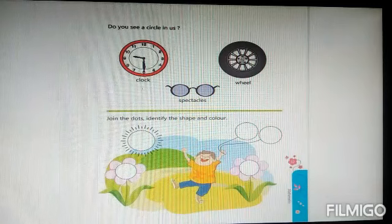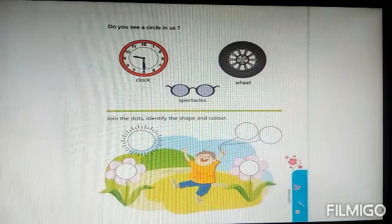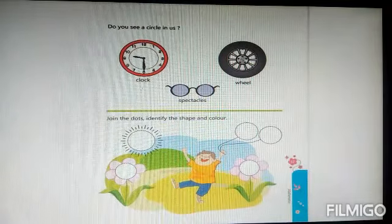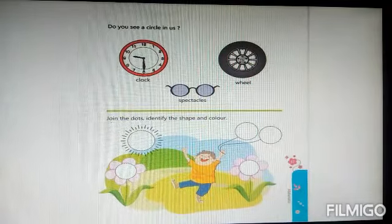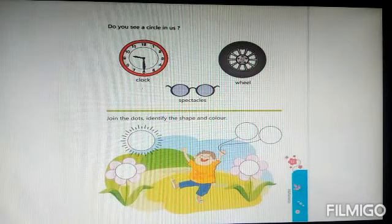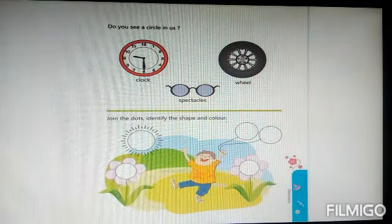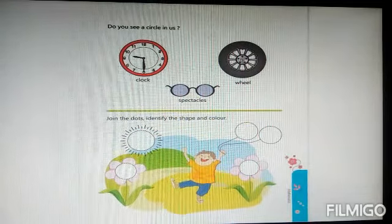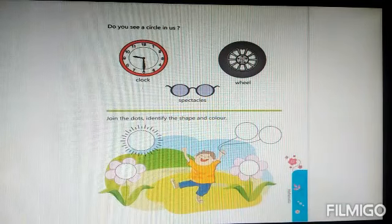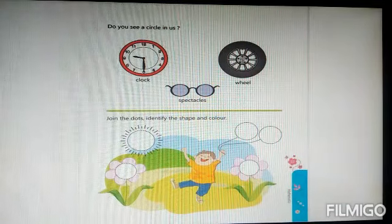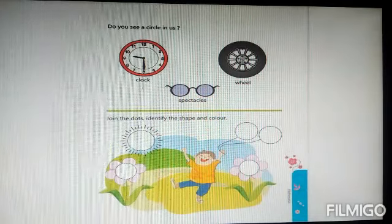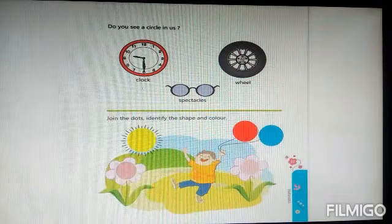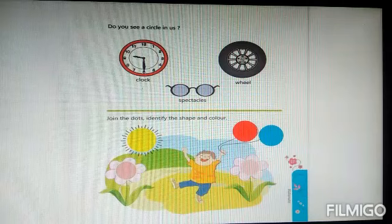Now, what is here? Spectacles. Spectacles are also in circle shape. Now, let us do an activity. See, join the dots. Identify the shape and color. You have to join these dots. Make it round. Circle. Then, these two flowers also. Then, these are balloons. After, join the dots and color.